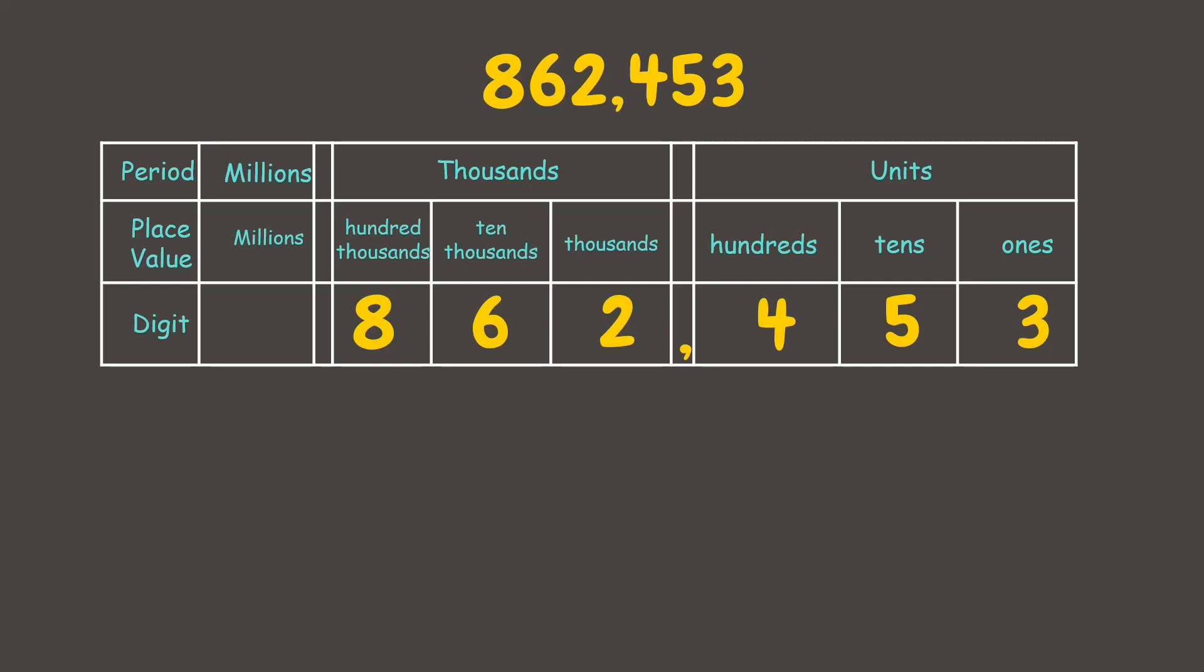Now let us read. First we have here 862, which is in the thousands period, so that's 862 thousands. And we have 453. So we read this number as 862,453. Now let's try reading and writing more numbers.